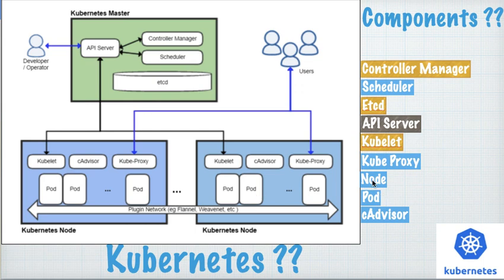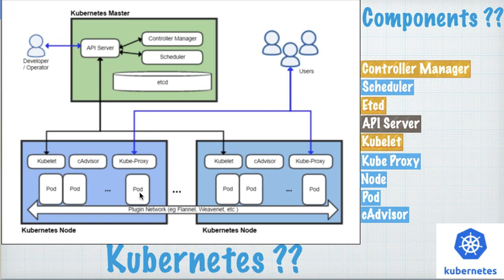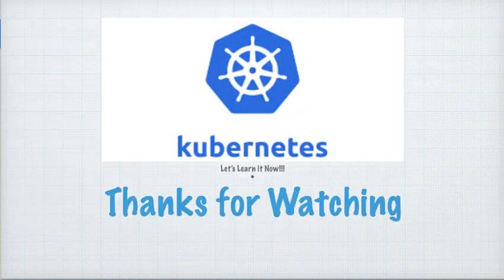We will have upcoming videos explaining these components in detail — the main functions of the controller manager, how the scheduler works, its internal components and types, what etcd is and what we store in it. This is a basic introductory video so you understand what components exist and who accesses what. Developers access via the API server, and end users access via kubeProxy through a shared URL or endpoint to reach the pods.